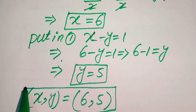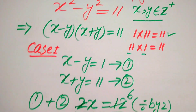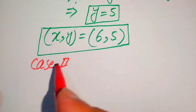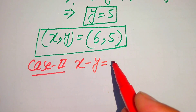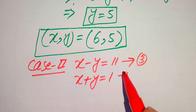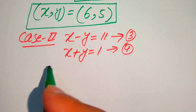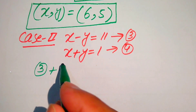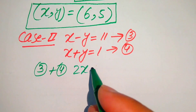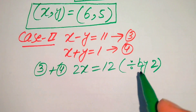Now we move to the second case, where we compare the two factors with the other pair of values. In the second case, it is written as: x minus y equals 11 (equation 3) and x plus y equals 1 (equation 4). We again add equations 3 and 4. The positive and negative y terms cancel, giving us 2x equals 12, and dividing by 2 gives x equals 6.